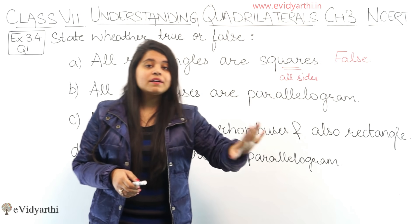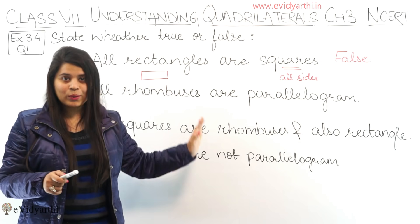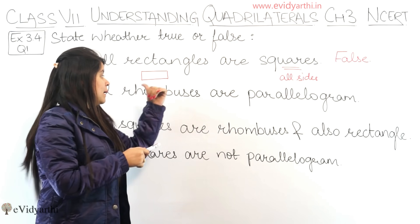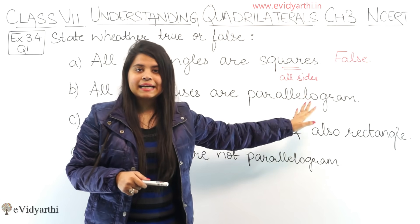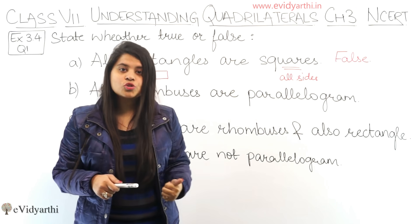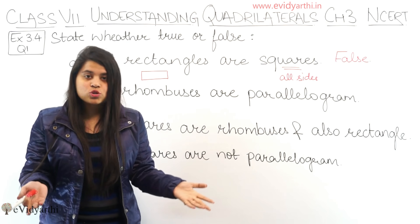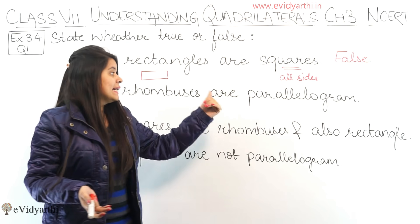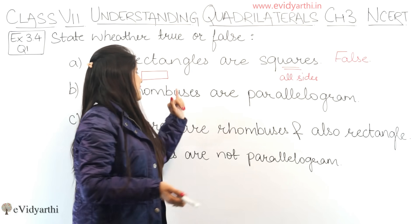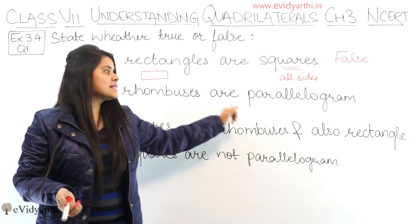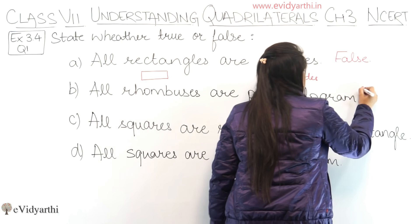However, it is not necessary that all parallelograms are also rhombuses — that is the trick here. For example, if asked 'all squares are rectangles,' that is true because opposite sides are equal. But if you flip it, it would be wrong. Similarly here: all rhombuses are parallelograms — this is true.